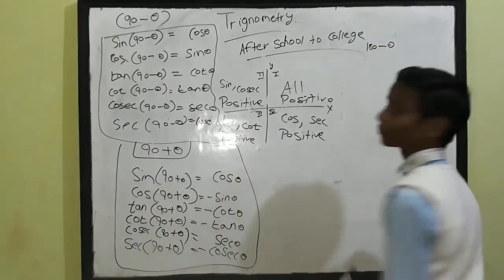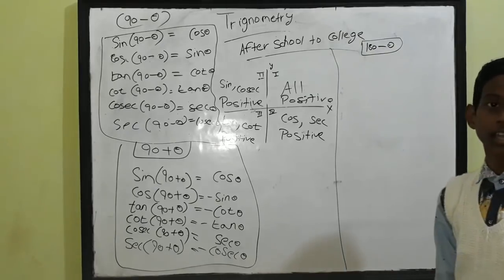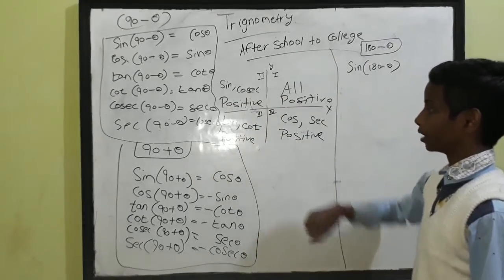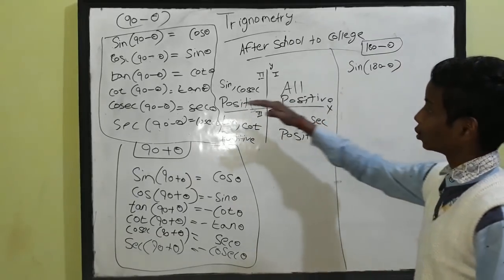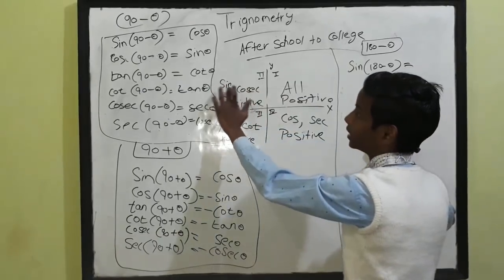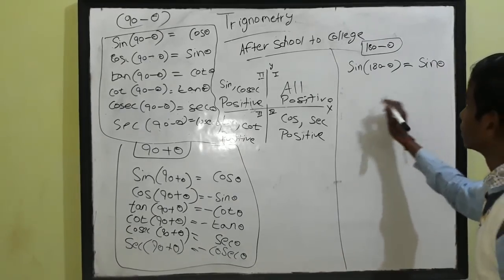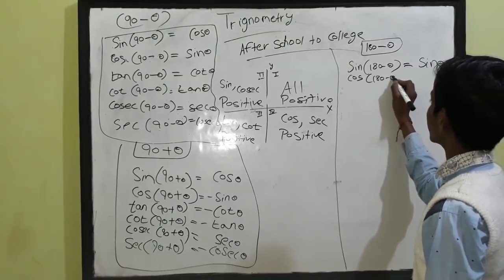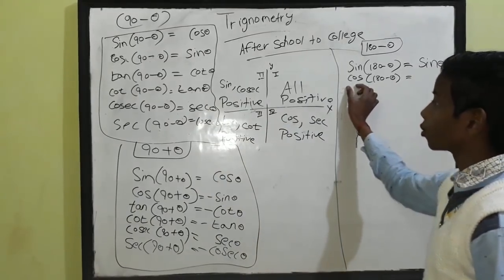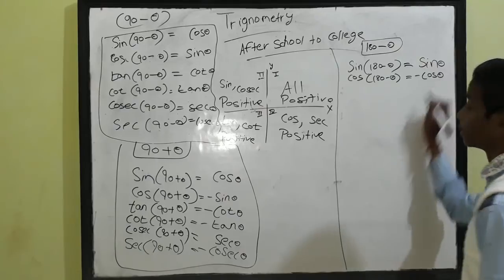This was 90 plus theta. Now let's talk about 180 minus theta. We are thinking how to make these formulas, but it's also too easy. Write sin(180 − θ). This is 180 and we are subtracting some angle, so it is coming in the second quadrant. In the second quadrant, sine is positive. So sin(180 − θ) = sin θ. Now cos(180 − θ) — it's also in the second quadrant. Is there any cos? No, only sin and cosec are positive. So cos(180 − θ) = −cos θ.